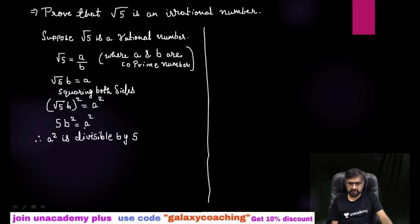Therefore, you can say that a squared is divisible by 5. If you want to take it here also, b squared equals to a squared by 5, then also you will get the same thing. Therefore, if a squared is divisible by 5, then a is also divisible by 5. Take it as result number one. So a is divisible by 5.